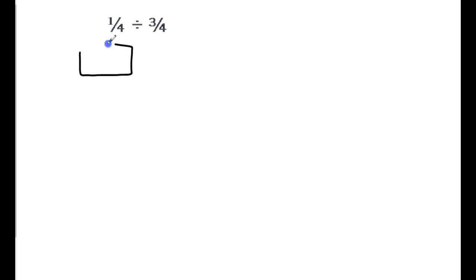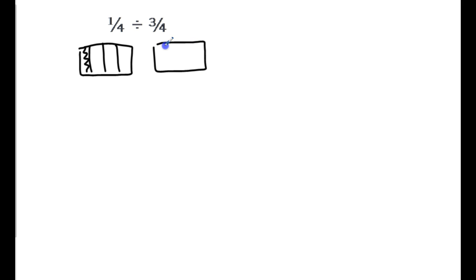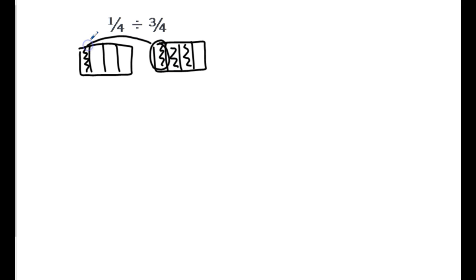Again here we have common denominators. We'll represent the problem: one-fourth looks like this, and three-fourths looks like this. Our question asks how many three-fourths fit into one-fourth. I see this piece can fit right here — so it's equivalent to one out of how many? Out of the three that are here. So our answer is one-third.